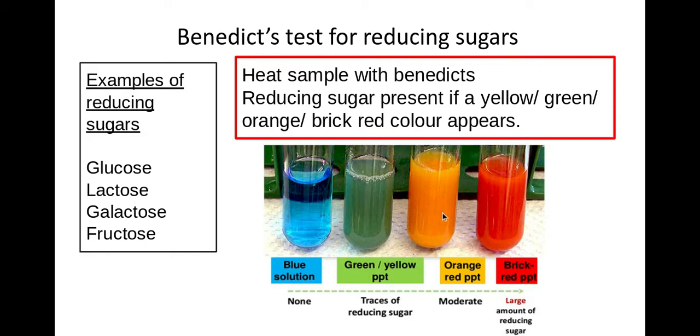If I've got a moderate concentration I'll get an orange precipitate and then if I have a strong concentration or a large concentration I would get a brick red precipitate.